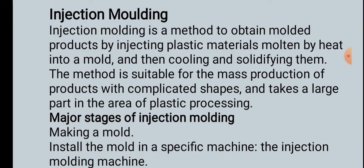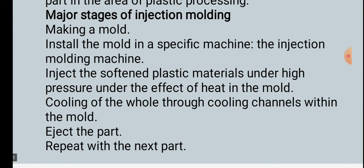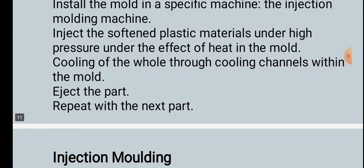Major stages of injection molding: make a mold and install it in the injection molding machine; inject the softened plastic materials under high pressure and heat into the mold; cooling of the part through cooling channels within the mold; eject the part and repeat for the next part.